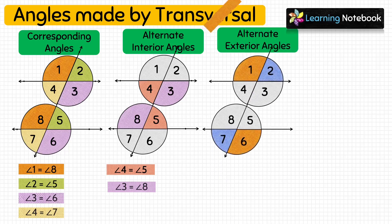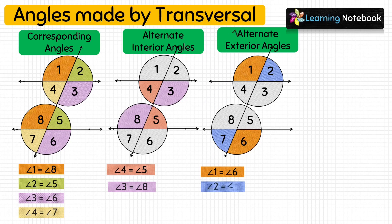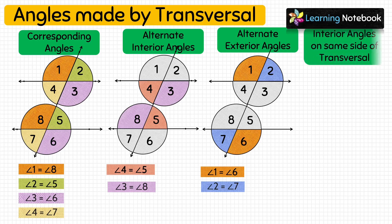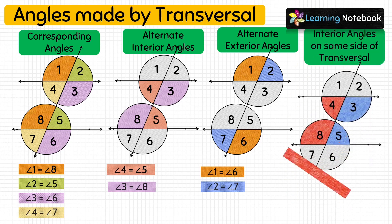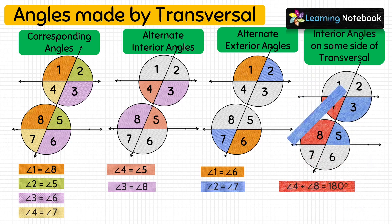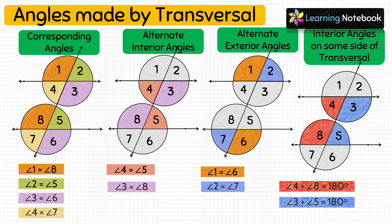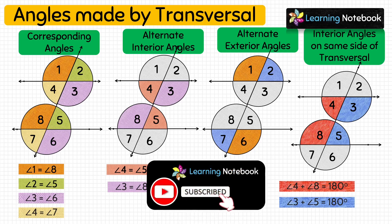Next, we proved that the pairs of alternate exterior angles made by a transversal are equal — angle 1 equals angle 6 and angle 2 equals angle 7. And finally, we proved that the pairs of interior angles on the same side of the transversal are supplementary — angle 4 plus angle 8 equals 180° and angle 3 plus angle 5 equals 180°.